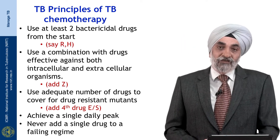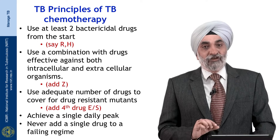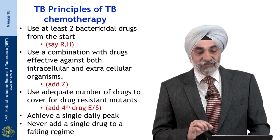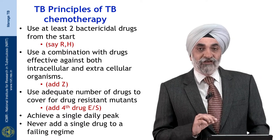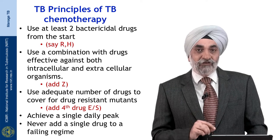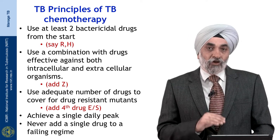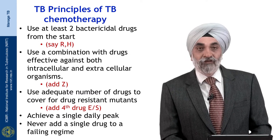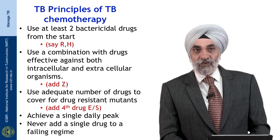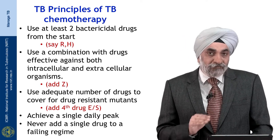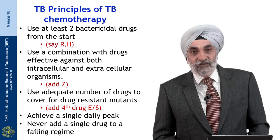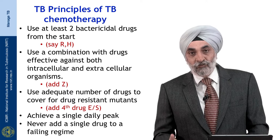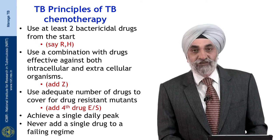Mycobacterium tuberculosis divides in about 17 to 20 hours and is killed only when dividing. Therefore, a single daily peak dose is needed — there is no benefit in dividing anti-TB drugs into more than one dose per day. Equally important: if you have a failing regimen, never add a single drug, because there may be a metabolic population not receptive to that drug, and you risk amplification of resistance.